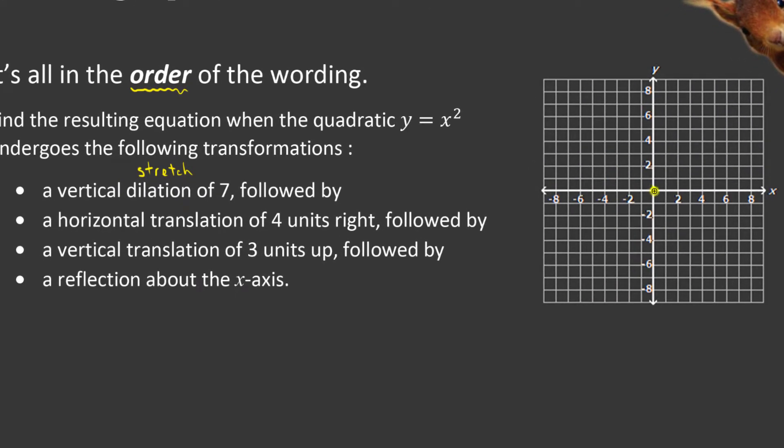So our everyday parent function has a vertex at 0, 0. And so if it's stretched by 7, it's going to be quite skinny and come up like this. And so that's fine. This is just a quick sketch, right? So a really skinny parabola.